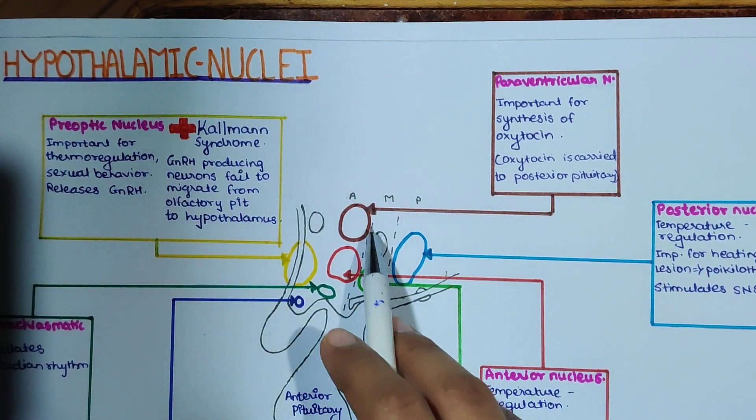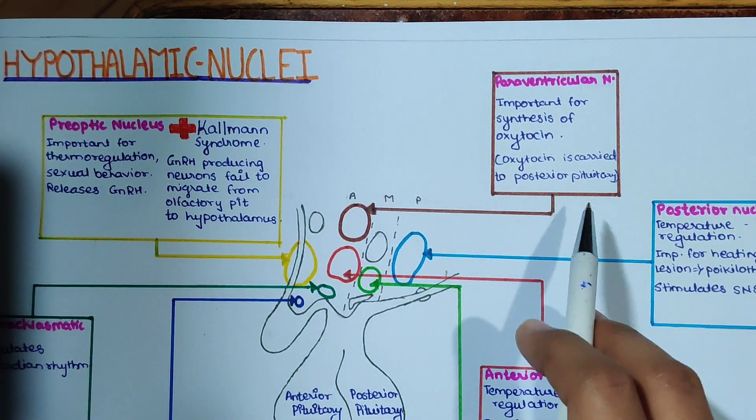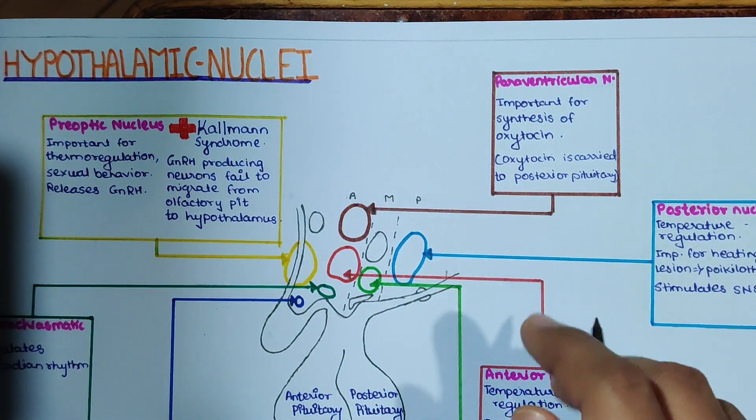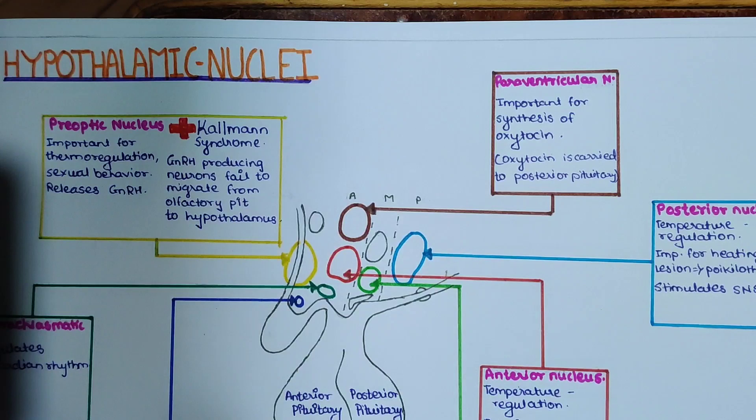Paraventricular nuclei, highlighted in brown, is important for synthesis of oxytocin. Oxytocin is also carried to posterior pituitary where it is stored and released as required.